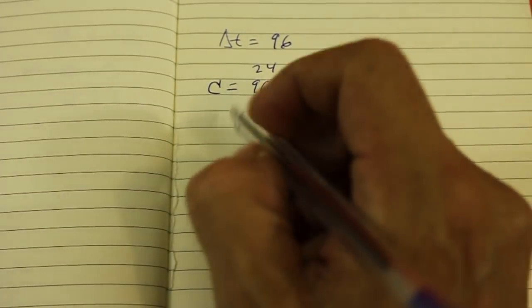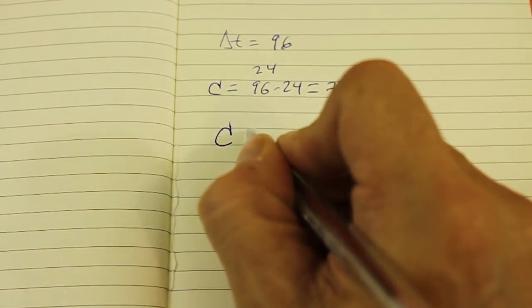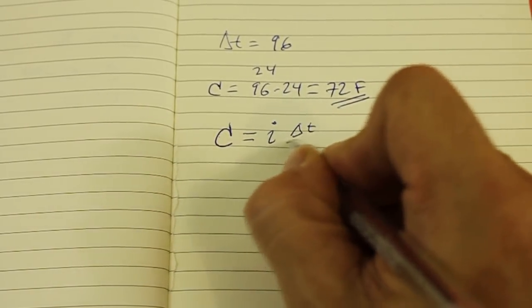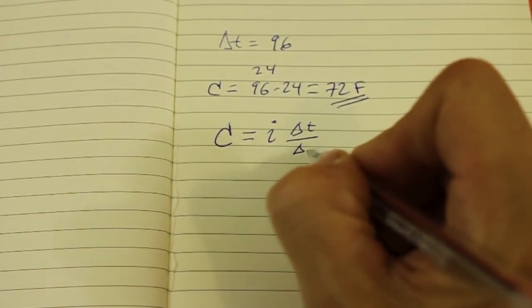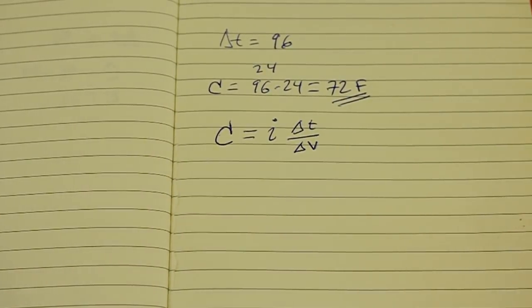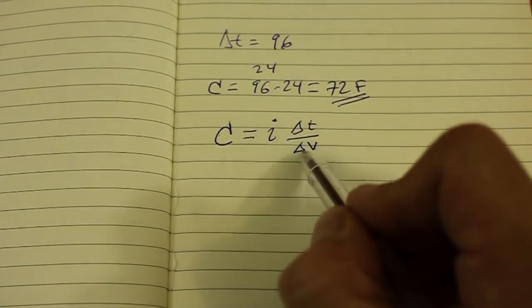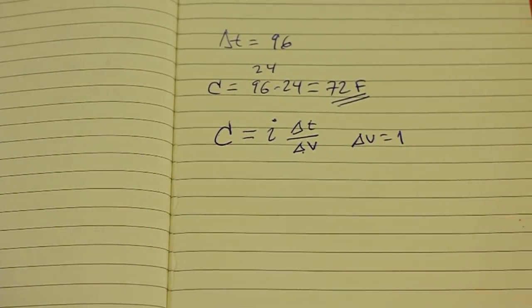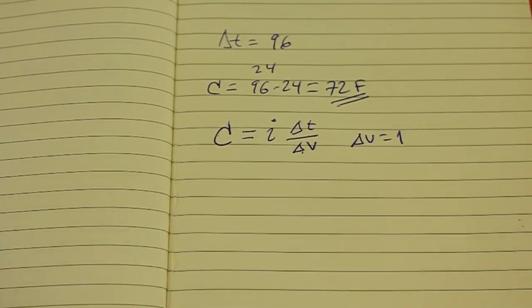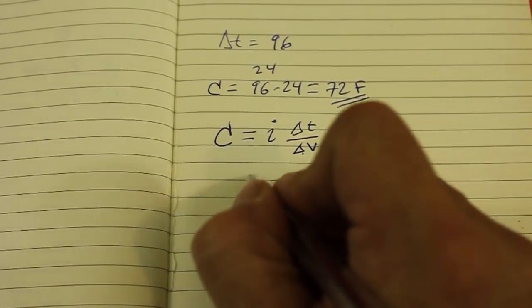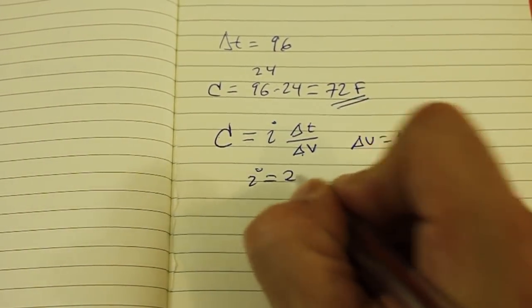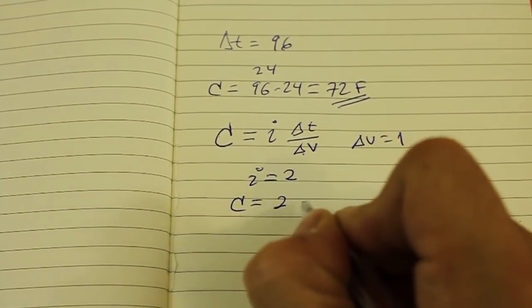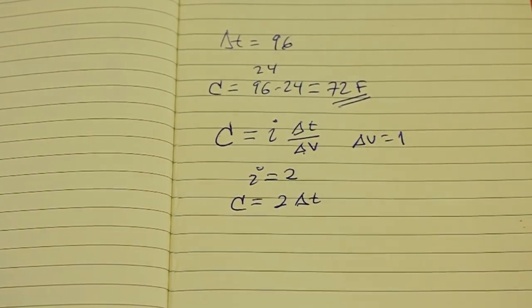However, remember that our formula says that capacitance equals current times time interval divided by the voltage interval. If we still use a voltage interval of 1 volt, but we use a larger current to charge the supercapacitor, for example, we set current equal to 2 amps, then capacitance will be 2 times delta T.